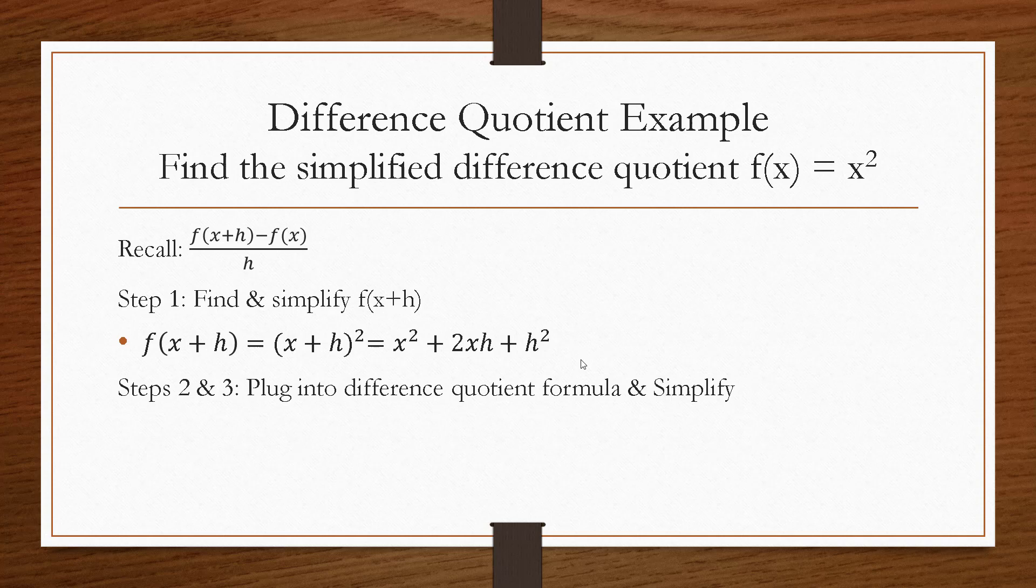Next, we're going to plug this into our difference quotient formula and then simplify. So our f of x plus h was x squared plus 2xh plus h squared, so I plug that in over here. Then I'm going to subtract my f of x, which was just x squared, and divide all that by h. Be really careful when you simplify this difference quotient that you distribute properly, that you cancel out terms properly. Just be really careful. All right, so I see here that I have an x squared and I have a negative x squared. Well, those will cancel, and my numerator becomes 2xh plus h squared all over h. I could pull out an h and then cancel those h's to get 2x plus h. That is my difference quotient.